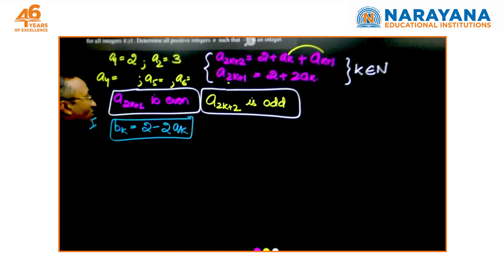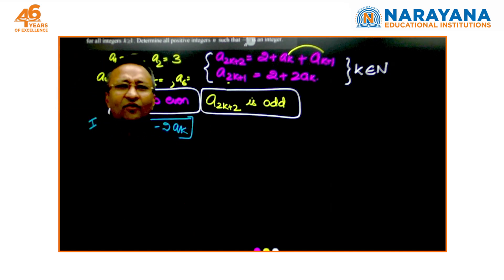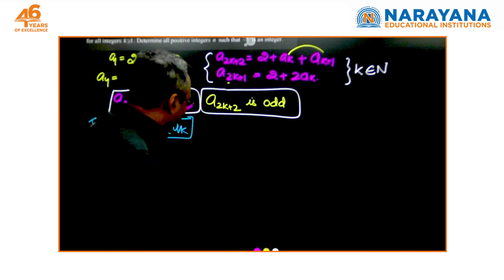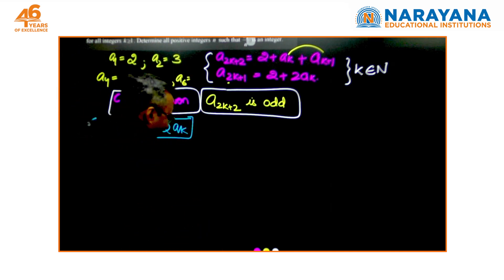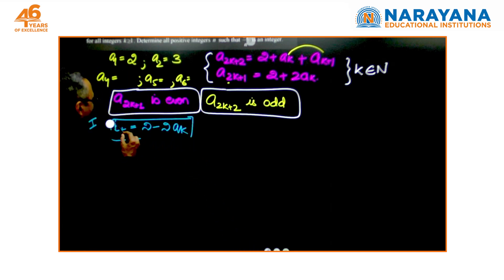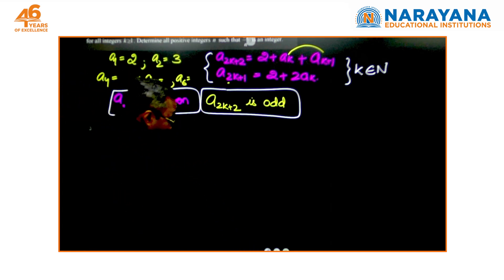Consider bk equals 2 minus ak or rather 2 minus 2ak. If something of this sort works, it would be easy getting rid of 2 and making a result. I will come to this later, but this would be one approach to easing this out.